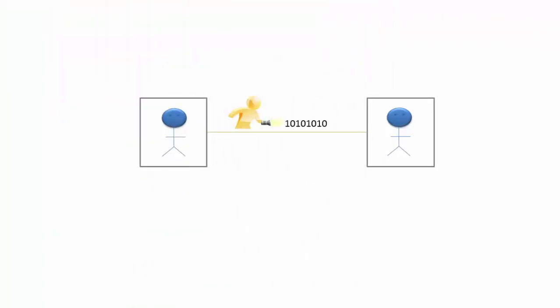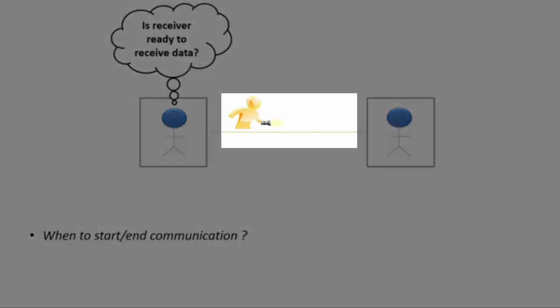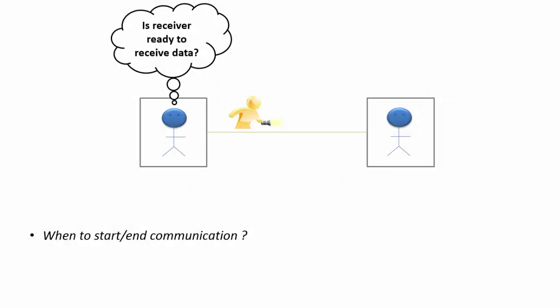Now we know how our two friends can actually exchange multimedia data using zeros and ones. However, there are more questions still unanswered. For example, when to start and end the communication. Because it may happen that first person is not sending any data, so the torch is off, but the other person keeps on receiving all zeros, thinking that it is a part of message.